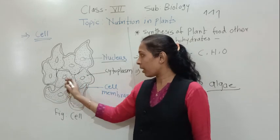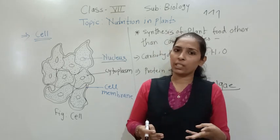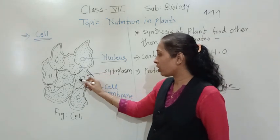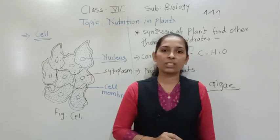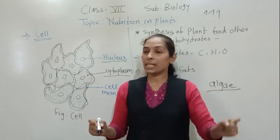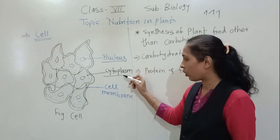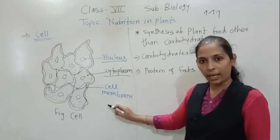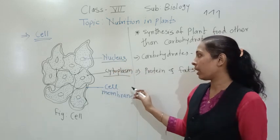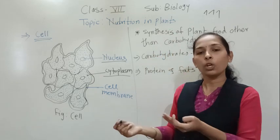Also around this nucleus, we can see a jelly-like substance — not solid, not liquid, but a sticky substance. The jelly-like substance which is present around the nucleus is called cytoplasm. So in each and every cell, all three components are present: nucleus, cytoplasm, and cell membrane. The cell membrane is the outer boundary; the nucleus is the centrally located spherical structure; and the cytoplasm is the jelly-like substance surrounding the nucleus. These are the basic three components of the cell.